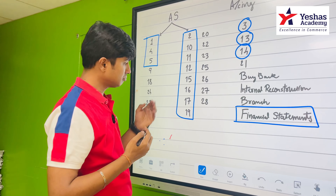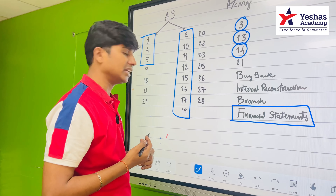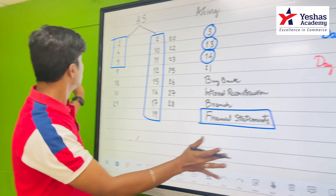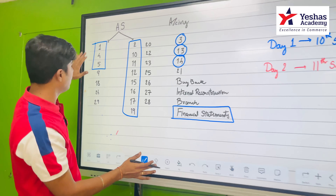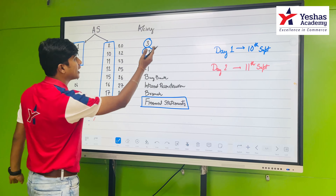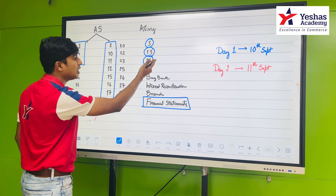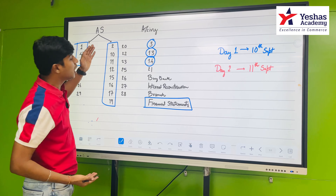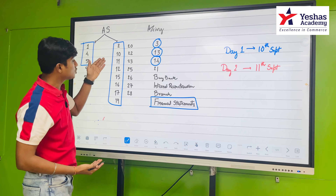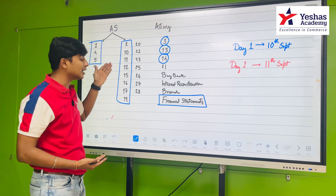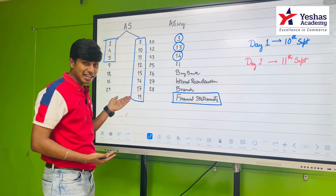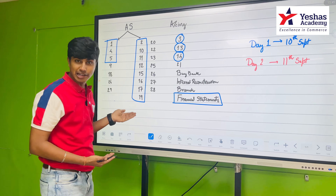Coming to accounting standards with number game, it's nicer if you can finish AS 2, 10, 11, 12, 15, 16, 17, and 19. So the plan for Day 1 is: start with AS 1, 4, 5; do Financial Statements; do Cash Flow Statement; Investment; Amalgamation; along with Inventory, PPE, Effects of Changes in Foreign Exchange Rates, Government Grants, Employee Benefits, Borrowing Cost, Segment Reporting, and Leases.